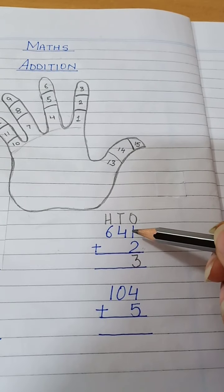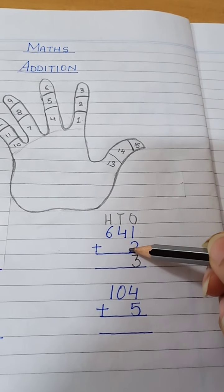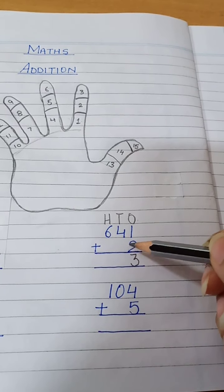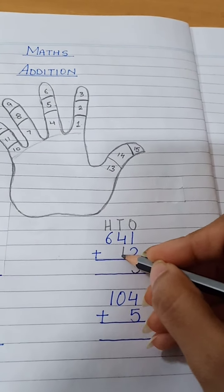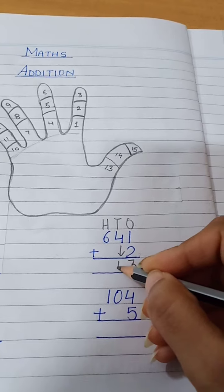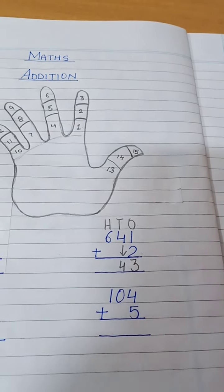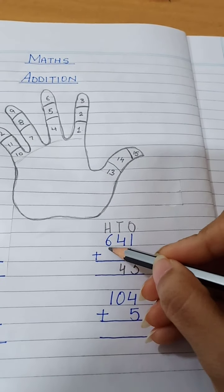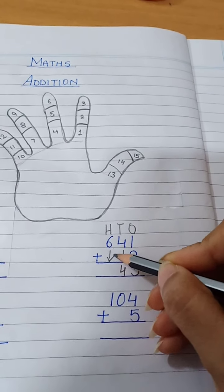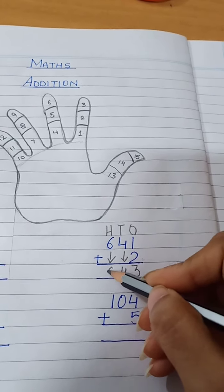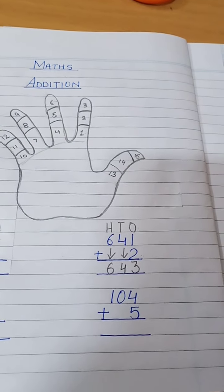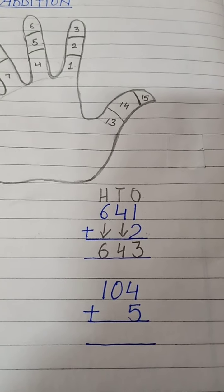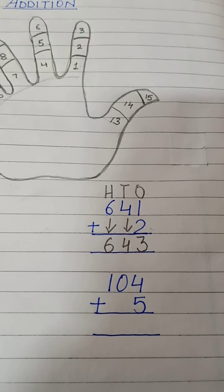As you can see, there is nothing below 4, so I will write 4 as it is. And there is nothing below 6, so I will write 6 as it is. So our answer is 643.